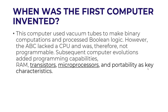The first computer used vacuum tubes to make binary computations and processed Boolean logic. However, the ABC lacked a CPU and therefore was not programmable. Subsequent computer evolutions added programming capabilities, RAM, transistors, microprocessors, and portability as key characteristics.